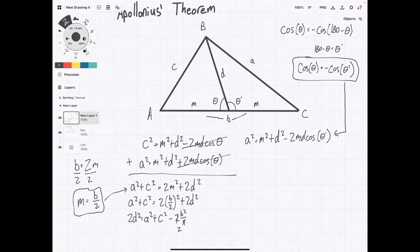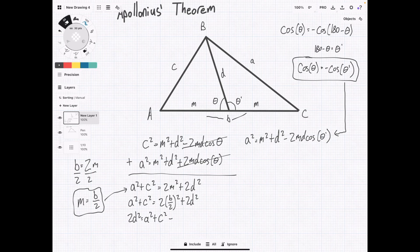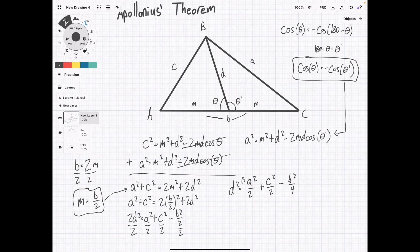And I'm just going to rewrite this to be b squared over 2. Now we're going to divide the 2 across. Divide everything by 2. And we're going to have d squared equals a squared over 2 plus c squared over 2 minus b squared over 4. And so we want to multiply both of these first two elements by 2 over 2 to get a common denominator. d squared equals 2a squared plus 2c squared minus b squared all over 4.